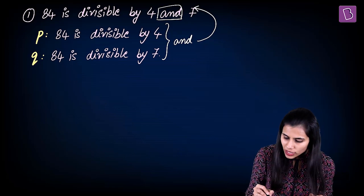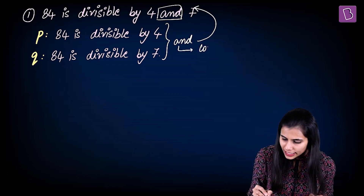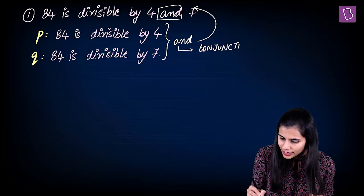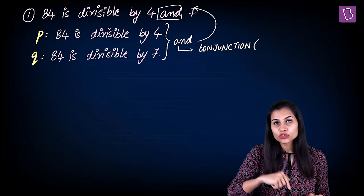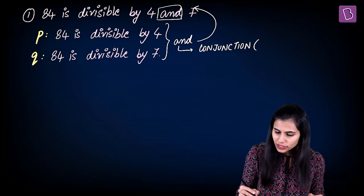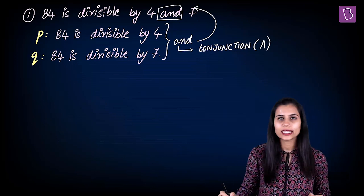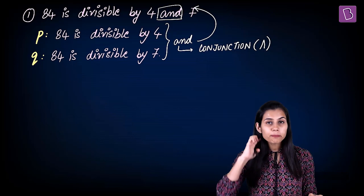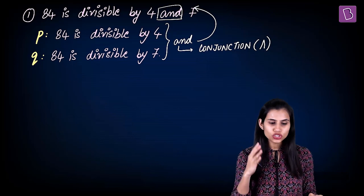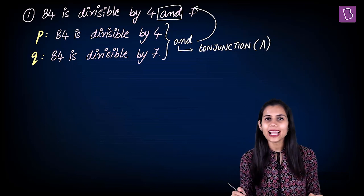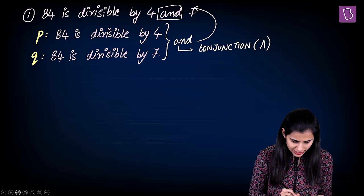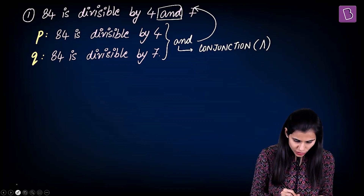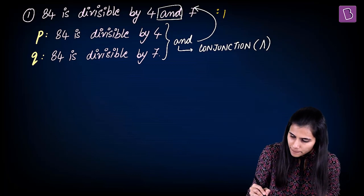Another word for AND is conjunction, and the symbol used to denote it is an inverted partial A. We say that the given compound statement is a conjunction of P and Q, and you write it as P ∧ Q.